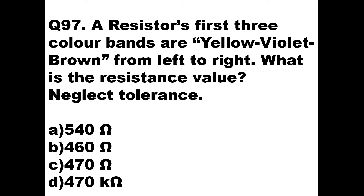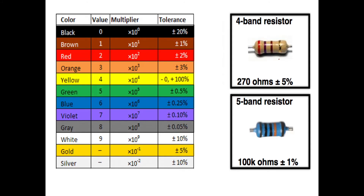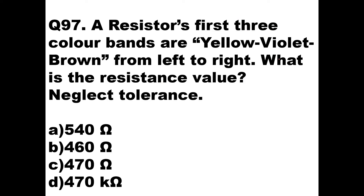A resistor's first three color bands are yellow, violet, brown from left to right. What is the resistance value? From the color code chart: yellow is 4, violet is 7 — these two are taken as digits 4 and 7 — and brown is taken as a multiplier of 10. So 47 multiplied by 10 equals 470 ohms. So option C, 470 ohms, is the answer.